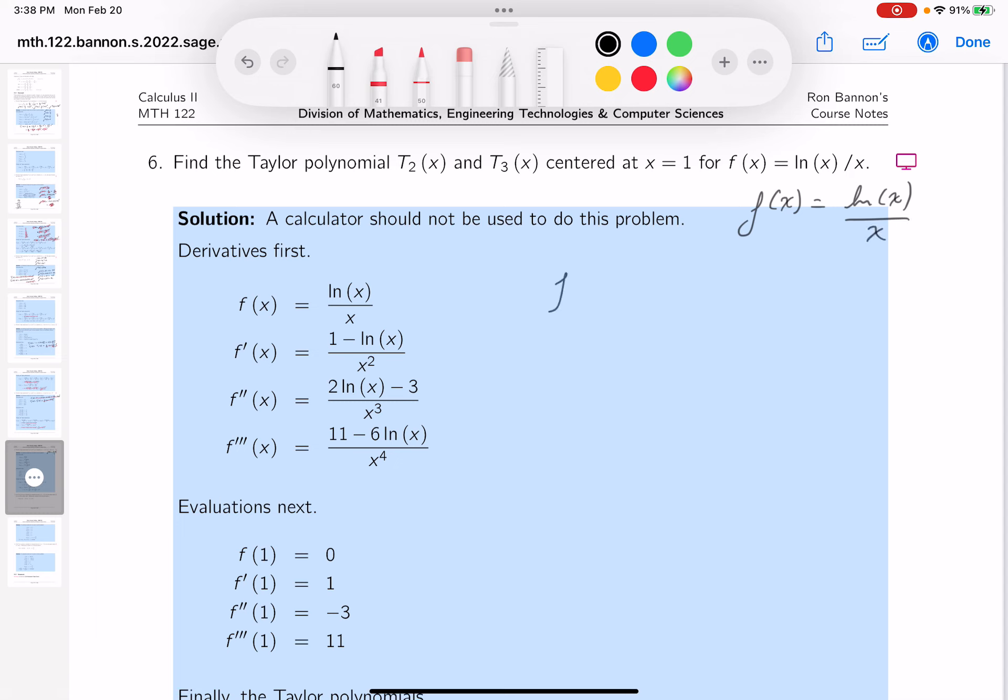And it's going to be the natural log of x over x. Let's do the first derivative. I'm going to use the quotient rule.